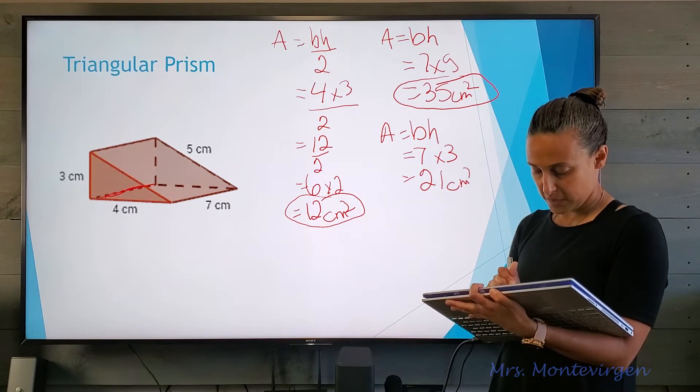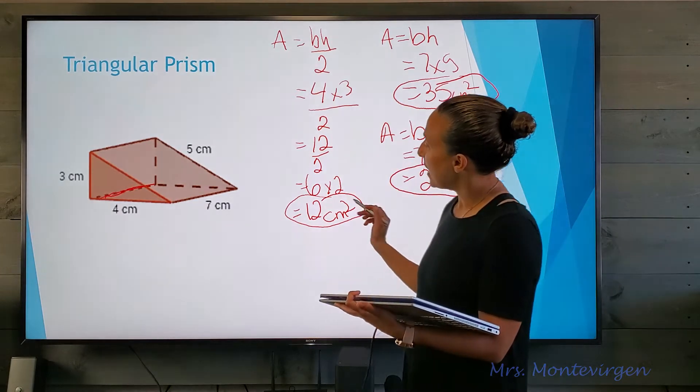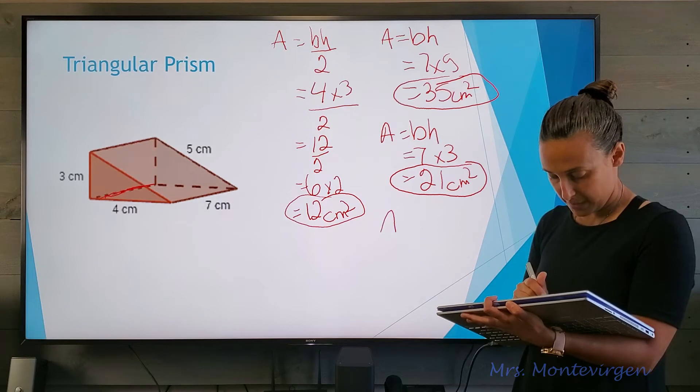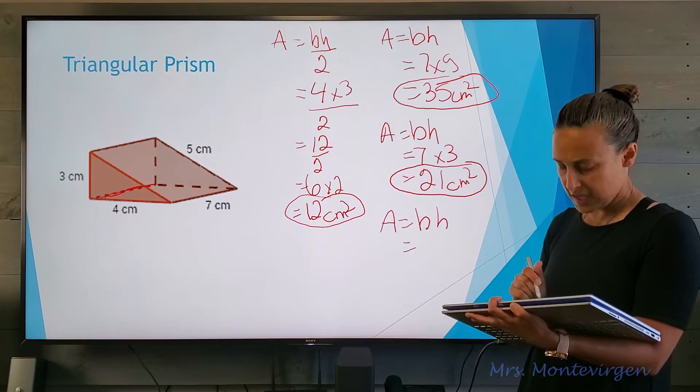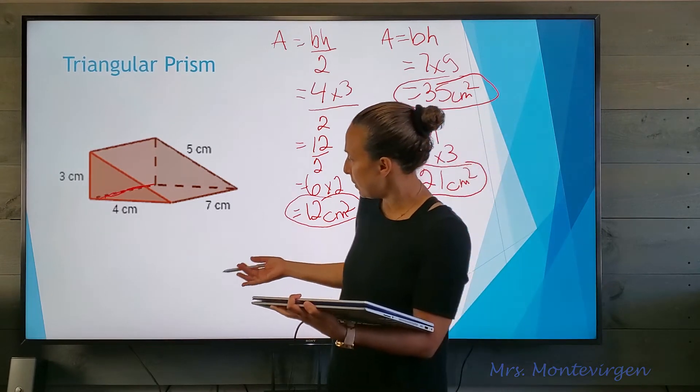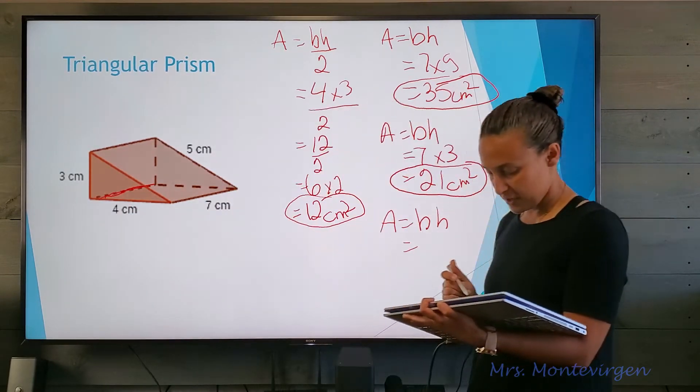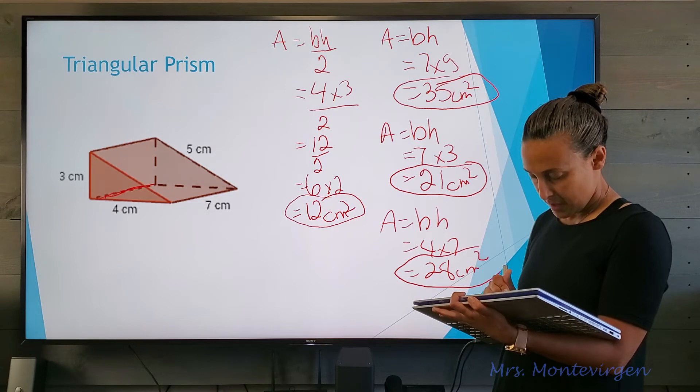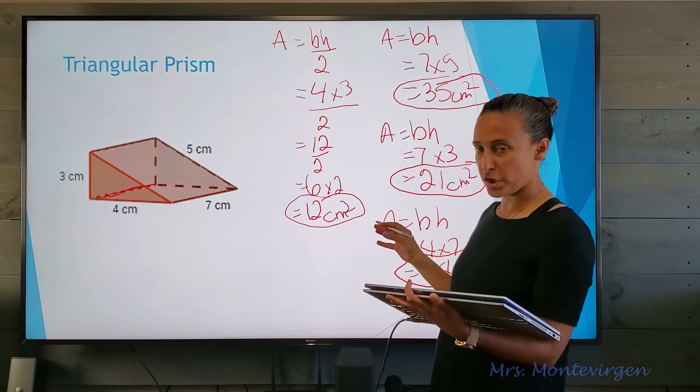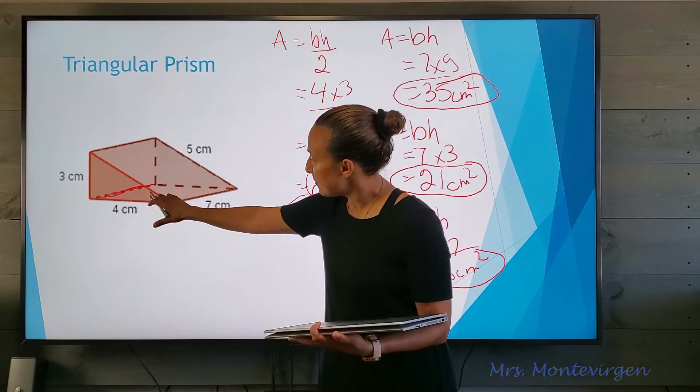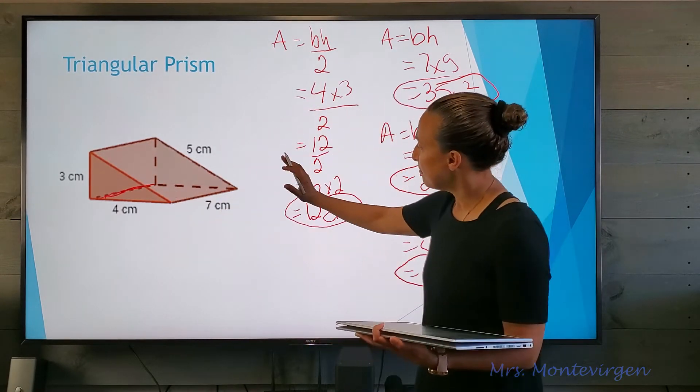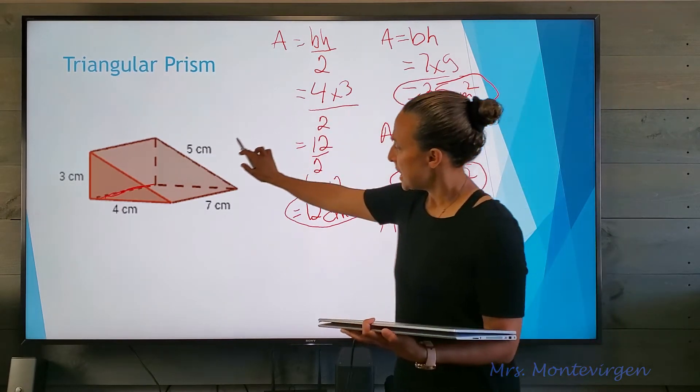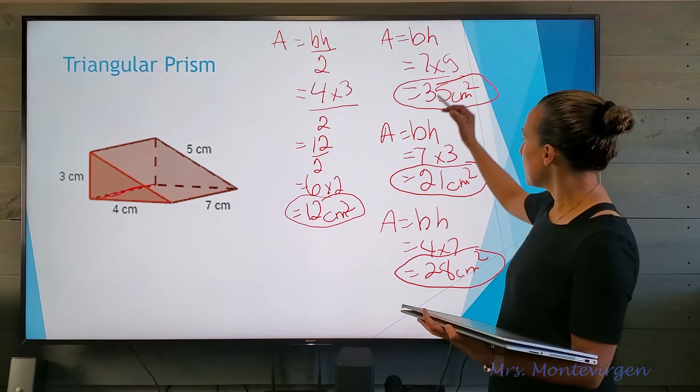I'm left with one last component which is going to be my base. Base times height, I can see my dimensions are four times seven, which is twenty-eight square centimeters. Before I add all the different parts up, I'm going to take a quick check to make sure I have all my different faces: the triangles, my front dimension, my back, and my base. I have all those different parts circled.